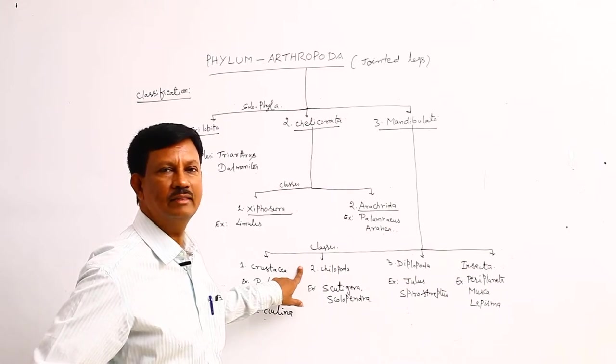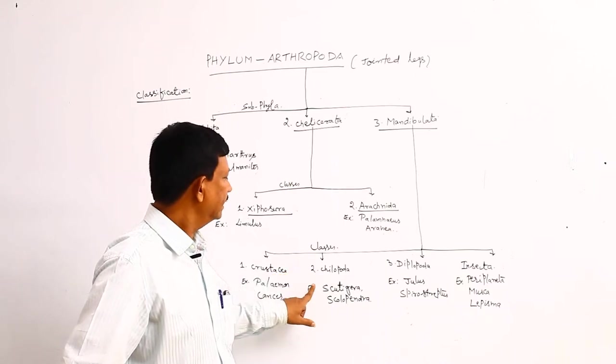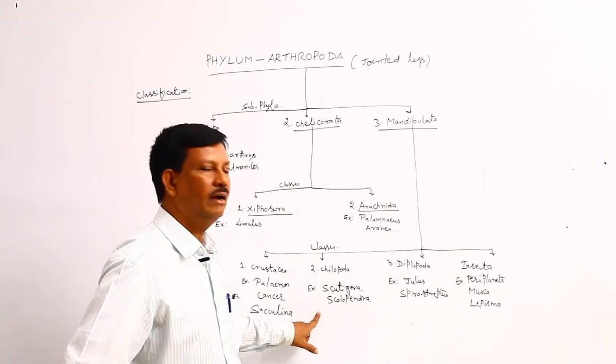Chilopoda means hundreds of legs are present here. On the basis of that, the class name is derived as Chilopoda. Example is Scutigera and Scolopendra.